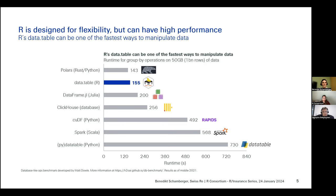Here is a particular example from a well-known benchmark comparing many different software tools and programming languages for typical database-like data manipulation — grouping data by attributes and doing aggregations. You can find frameworks like Polars written in Rust, the famous data.table written in C, data frames in Julia, real database systems like ClickHouse, and Spark. R isn't the fastest option, but the takeaway is that R can probably be fast enough.